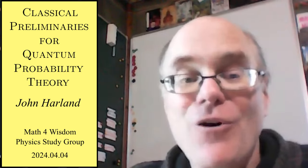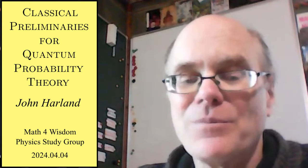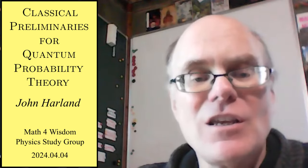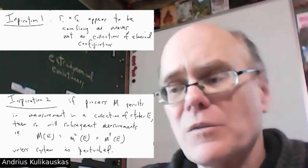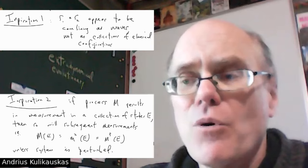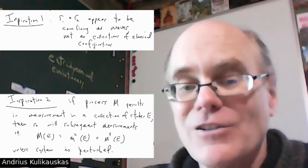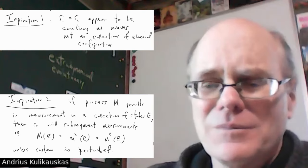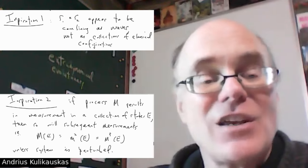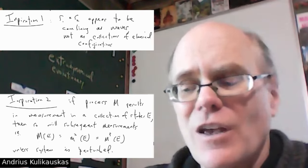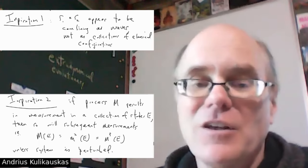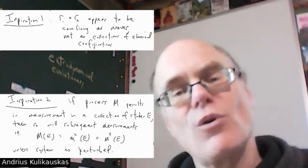John Harland leads our Math for Wisdom physics study group. He has a passion for physics and a PhD in functional analysis. He is tutoring me in this video about the classical preliminaries for all these questions, focusing on the two-slit experiment from the point of view of classical statistical mechanics, and mathematically trying to show that that's insufficient for dealing with the inspirations of quantum physics.